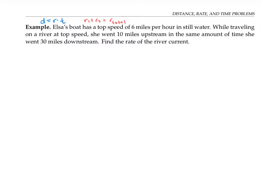I'm going to organize the information in this problem into a chart. During the course of Elsa's day, there were two situations we need to keep in mind. For one period of time, she was going upstream. And for another period of time, she was going downstream. For each of those, I'm going to chart out the distance she traveled, the rate she went at, and the time it took.